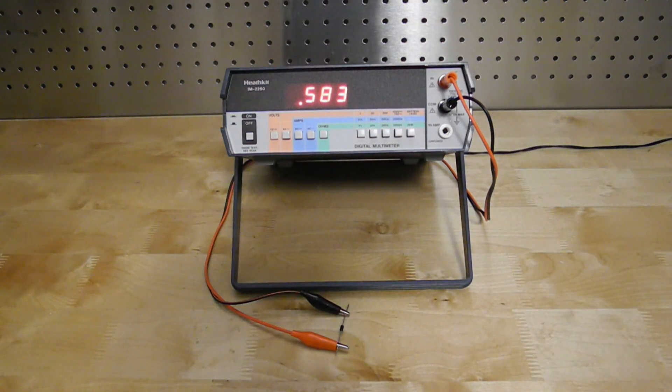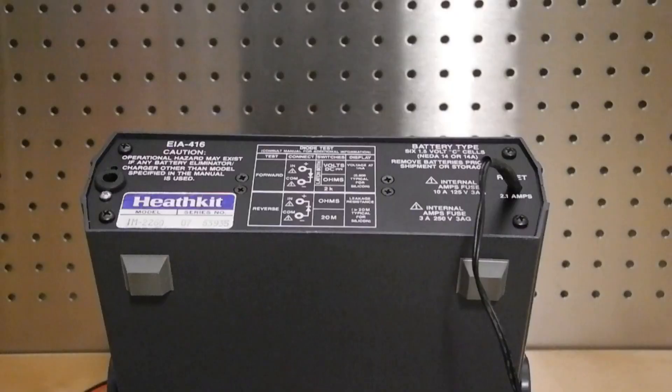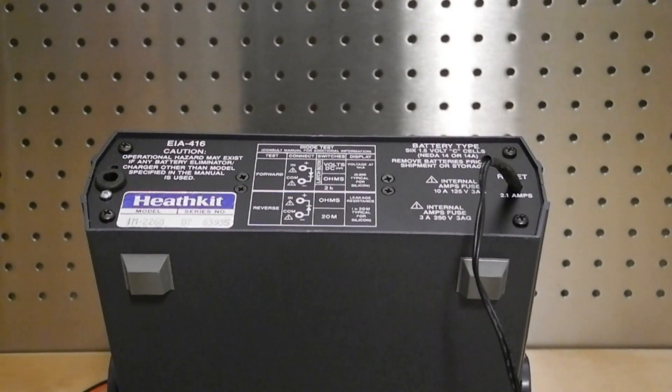Pressing ohms and DC and the 2K range activates the diode test function, which tests a diode forward voltage drop, typically about 0.6 volts for silicon diodes. They suggested also testing a diode reverse resistance using the highest 20 megaohm range, which should read as open. Bipolar transistors can also be checked like two back-to-back diodes. The diode test is summarized on the rear panel of the meter.